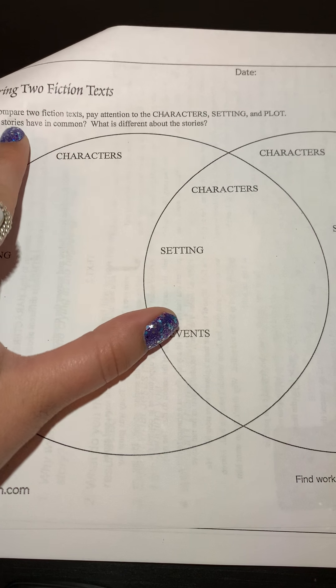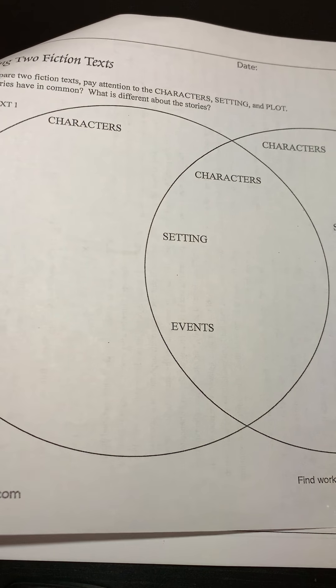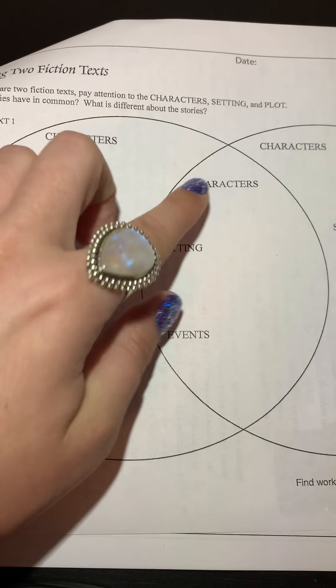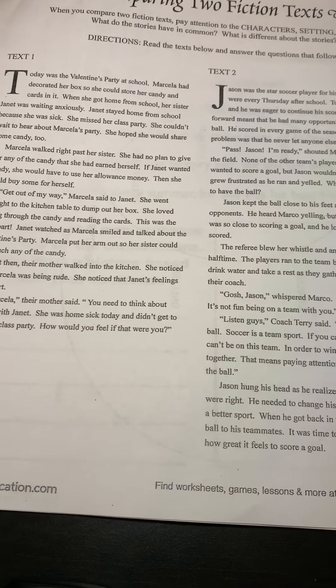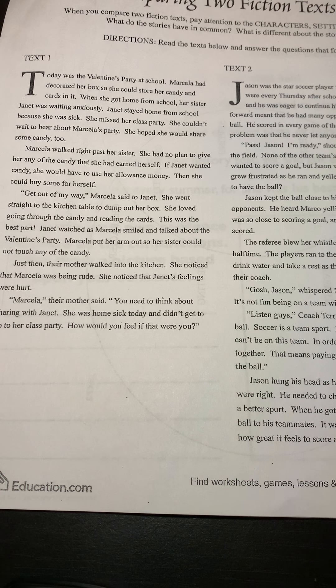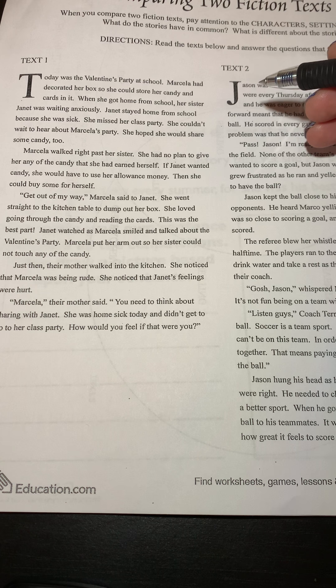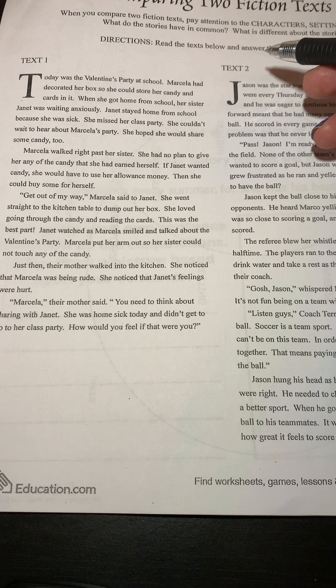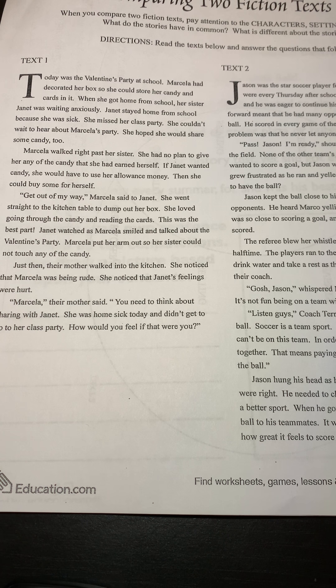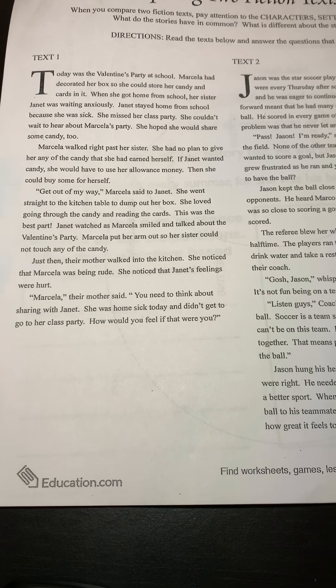These directions are exactly the same as on the front side. We're looking for characters, setting, and events, so let's pay attention to that as we read our stories. Just like last time, we'll read one text and maybe jot down some things — you might want to use a pencil, because you might not know that something is in common with text two. Write down a couple things in pencil, then read text two, and you'll be able to fill in what goes in the middle and what goes on the side for text two.